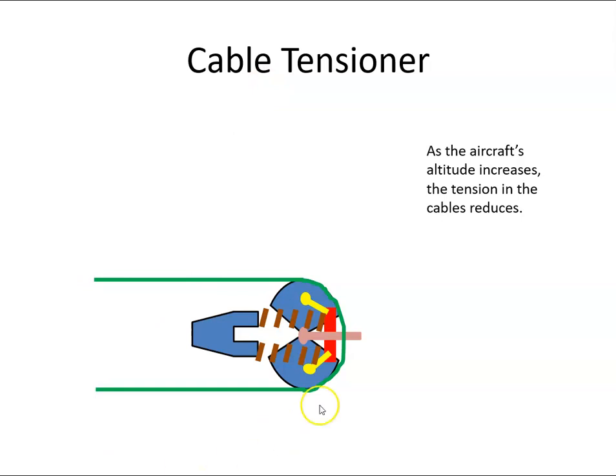Now, as we go up in altitude, the tension in the cables is going to reduce. The spring tension then dominates and is going to push this crosshead out. That's going to pull the two halves out.